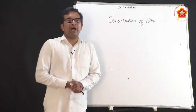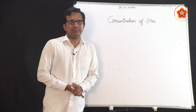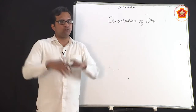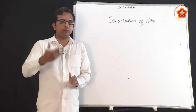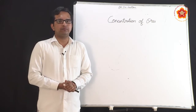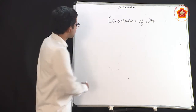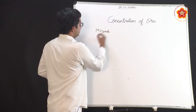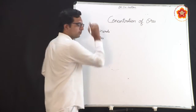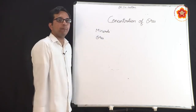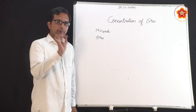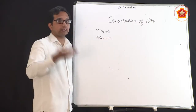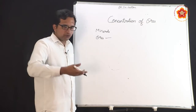Sairam to all of you. Having seen the occurrence of metals and where we get them from, we now need to look at the purification aspect. From the last segments, we have seen that minerals are compounds in which metals are present, while ores are those compounds from which you can extract the metals.